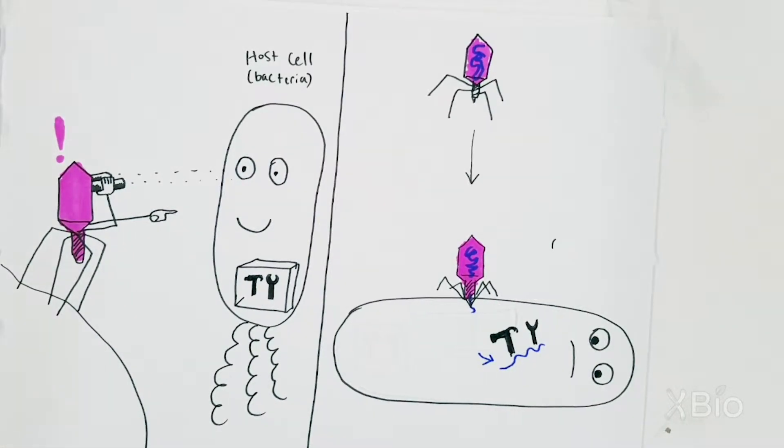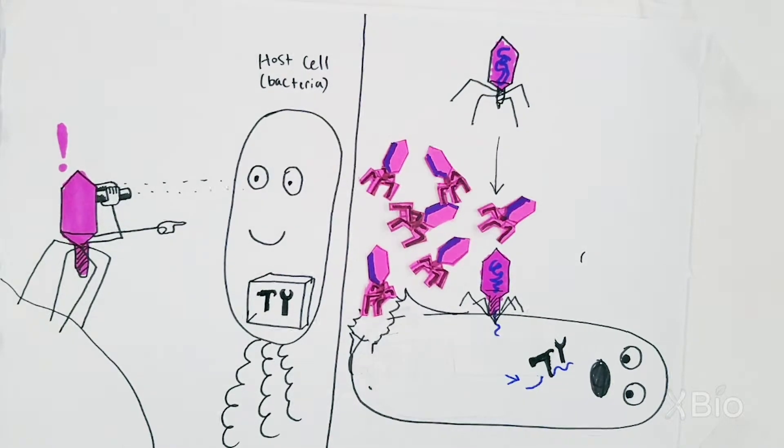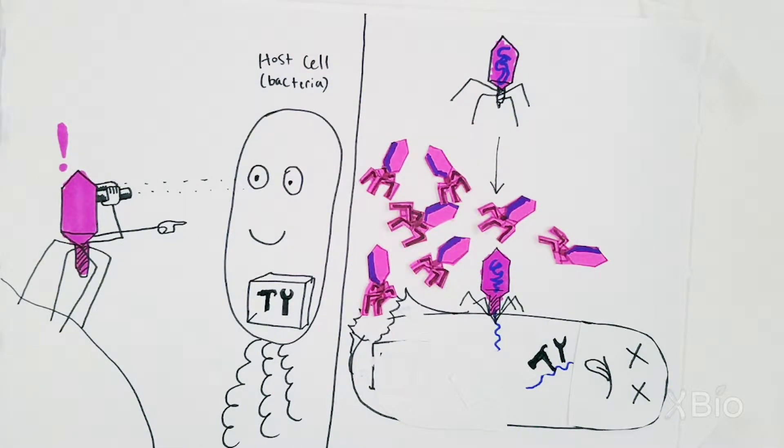Once the genetic material is inside, viruses can then immediately make more copies of themselves, which are then released into the environment, resulting in the death of the host cell.